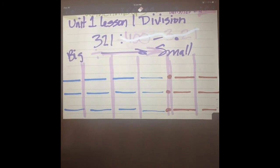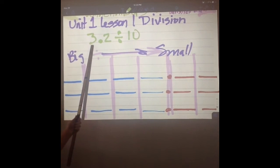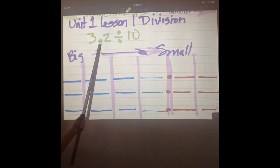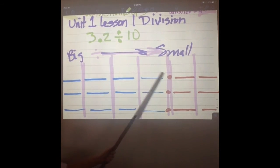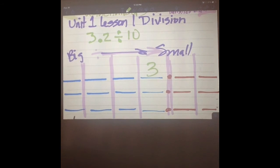Ready for another problem? Yes. Let's say I have 3.2 and I'm going to divide by ten. Where do I put it? Three point two: we're going to put the three in the ones place and we're going to put the two in the tenths—with a T-H-S. Right? Yes.